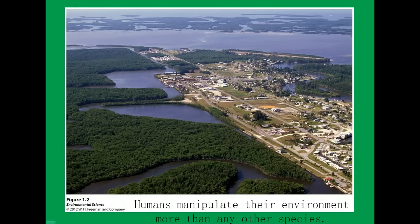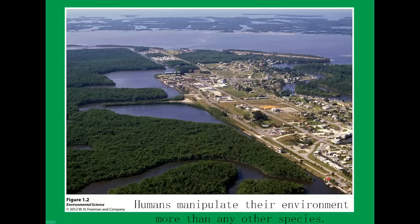This figure from your textbook shows how housing development is one of many ways humans have converted land from its natural state. It shows how beautiful natural areas have been turned into developmental regions. Where there are trees missing, that can lead to environmental issues, which we'll talk about.